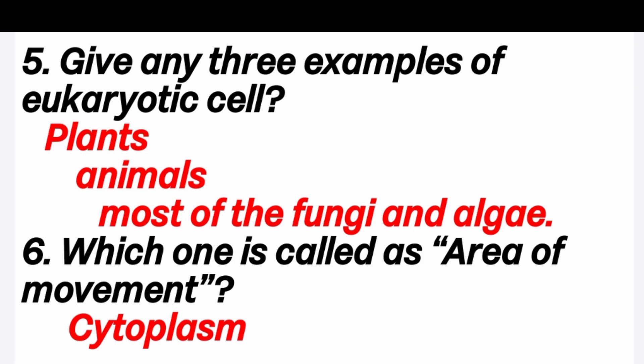Fifth question: give any three examples of eukaryotic cells. Answers: plants, animals, and most fungi and algae. Sixth question: which one is called the area of movement? Answer is cytoplasm.